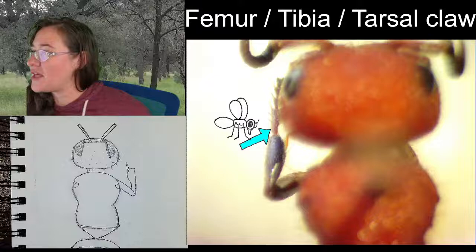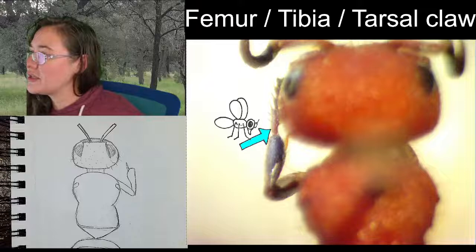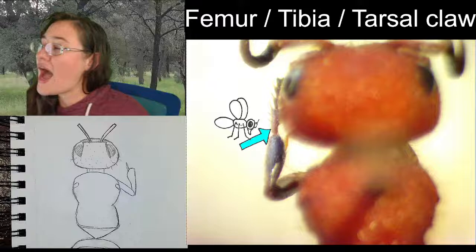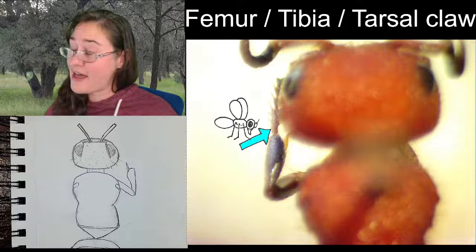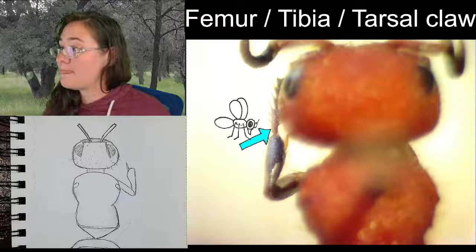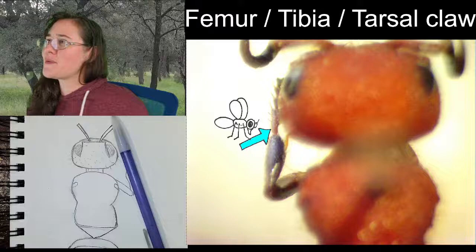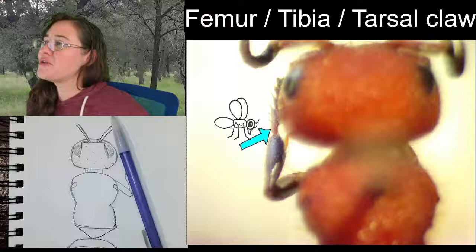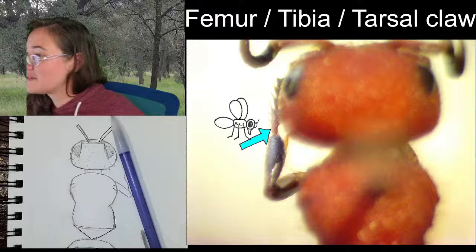Their tibia corresponds to our tibia and fibula — those are the names for our lower leg bones. The tibia is the bone between the patella and the ankle. The fibula is the smaller bone next to the tibia — insects only have the tibia, not the fibula.